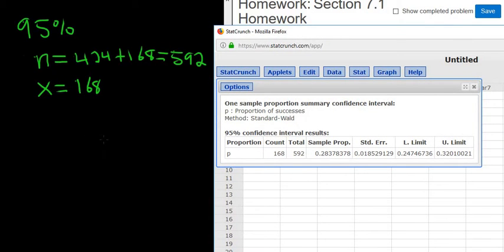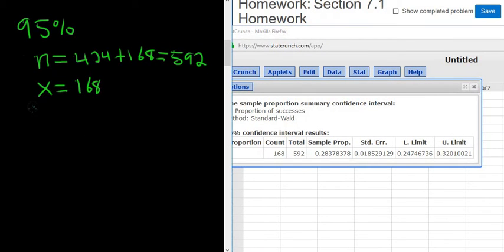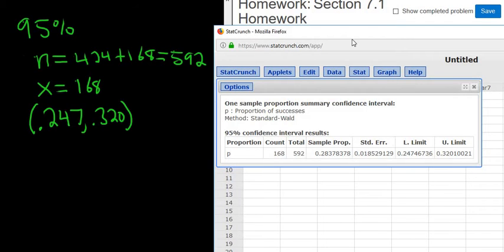This problem wanted three decimals, so I'm going to write three decimals. Using three decimals, I'm going to write the answer using parentheses: 0.247, 0.320. This is how you would write it on paper. It's always lower and upper in parentheses.